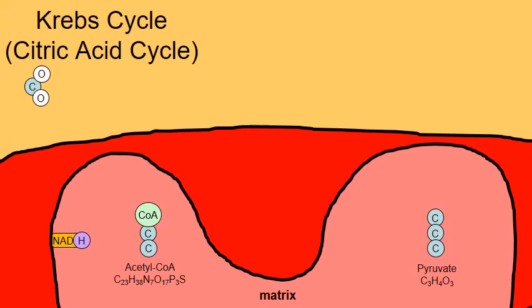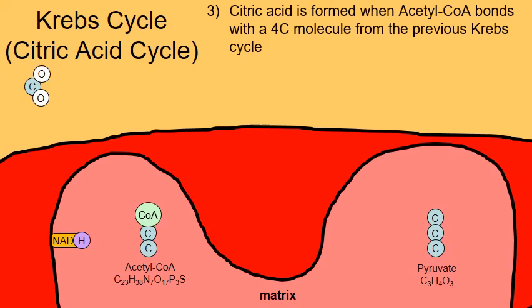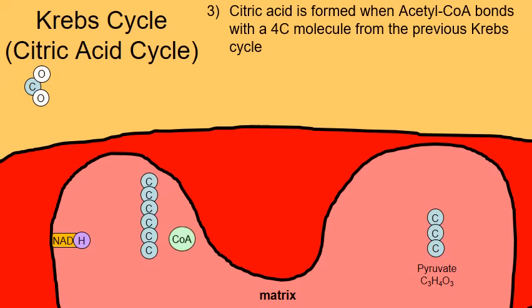This is where the Krebs cycle also gets its name — the citric acid cycle. Acetyl-CoA is converted and broken down into citric acid when a four-carbon molecule from the previous Krebs cycle bonds to the acetyl-CoA. An enzyme bonds that four-carbon molecule to the acetyl-CoA, Coenzyme A breaks away, and what's left is citric acid — a six-carbon molecule.